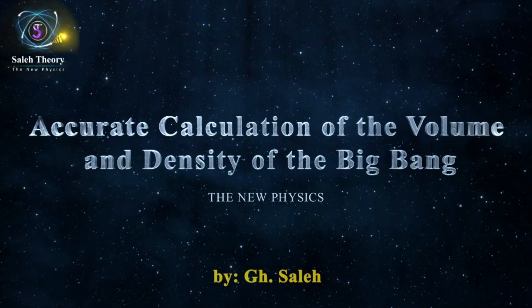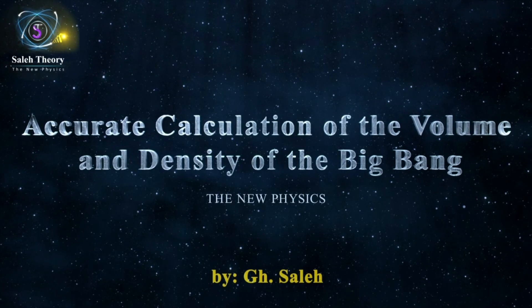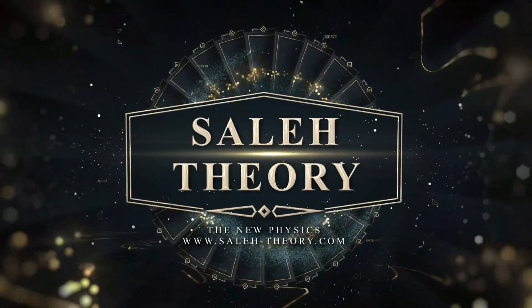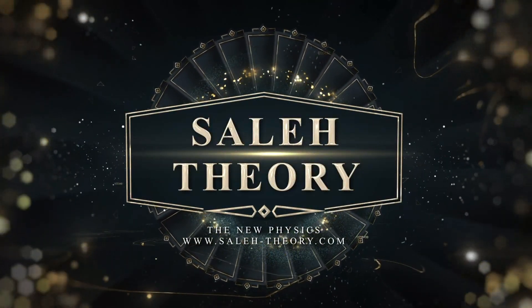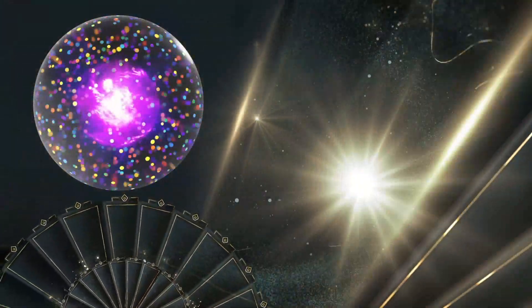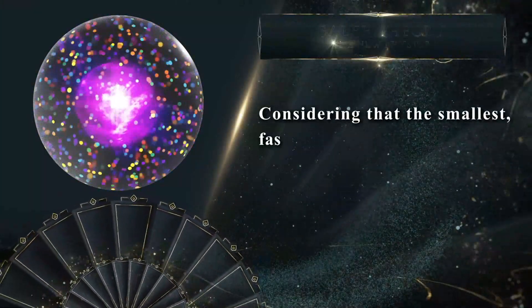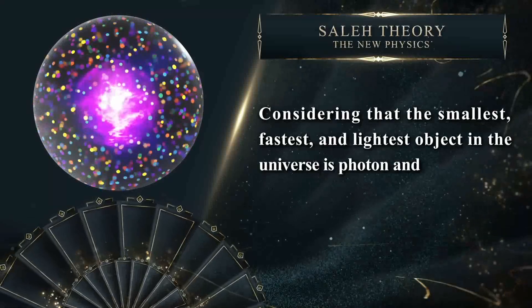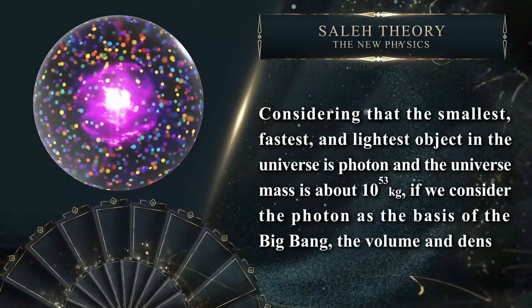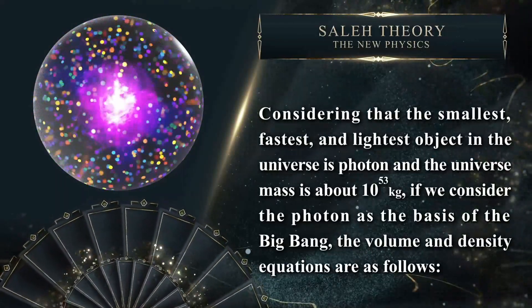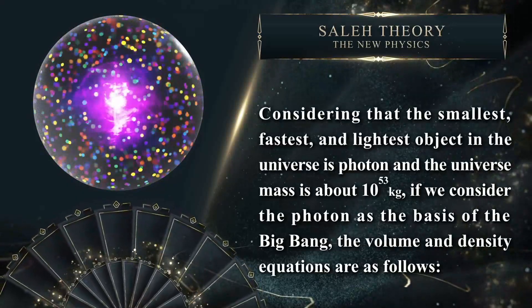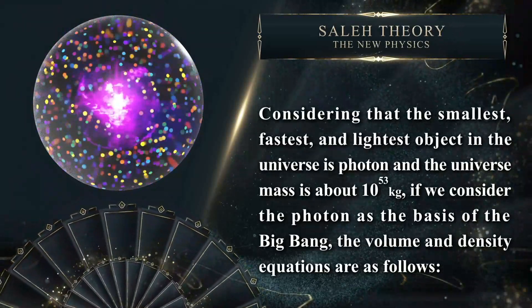Accurate calculation of the volume and density of the Big Bang. Considering that the smallest, fastest and lightest object in the universe is the photon, and the universe's mass is about 10 to the power of 53 kilograms, if we consider the photon as the basis of the Big Bang, the volume and density equations are as follows.